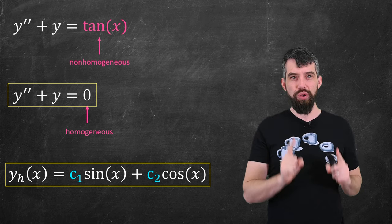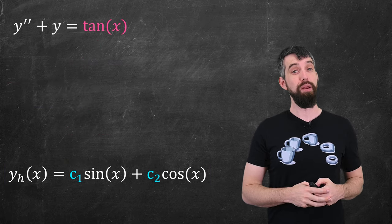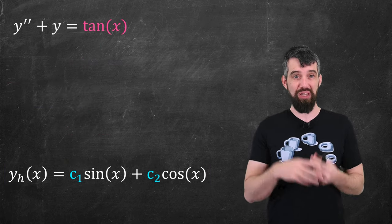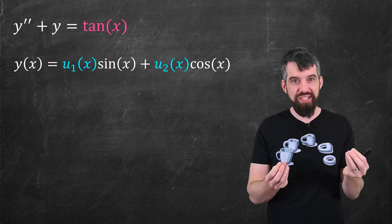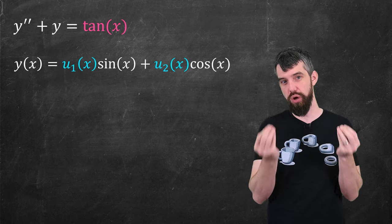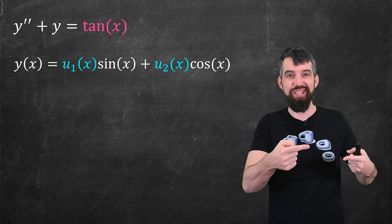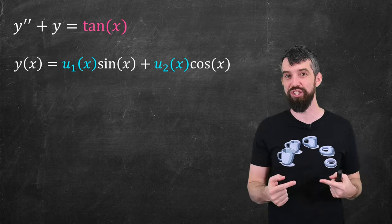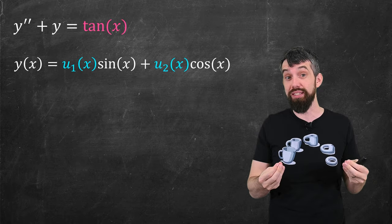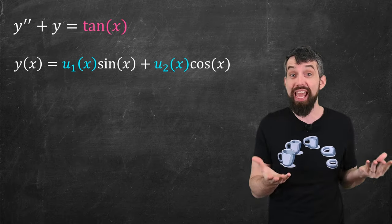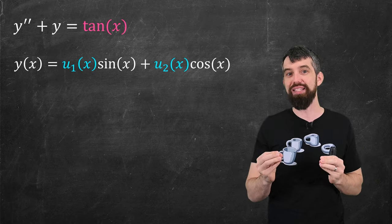Our real goal here is how to modify this solution to deal with the tangent of x. The approach we're going to take is: let's look at that solution which worked well, but instead of having two constants — a constant times sine and a constant times cosine — let's make them be arbitrary functions. We know the functions can't be constants because if you plug those in you'd get zero, and we want to get tangent. But maybe we can vary the parameters, vary these constants, in such a way that we get tangent of x. It's just a guess.